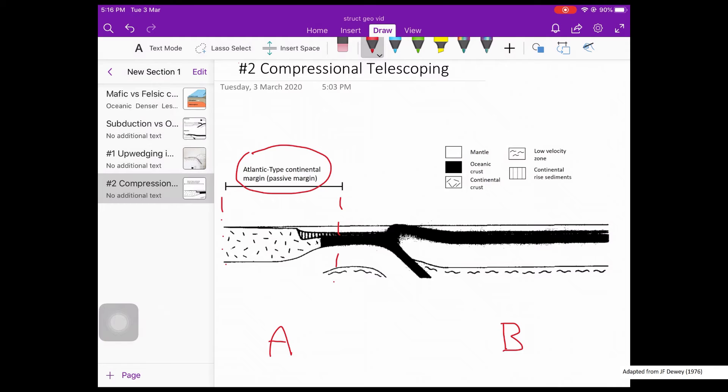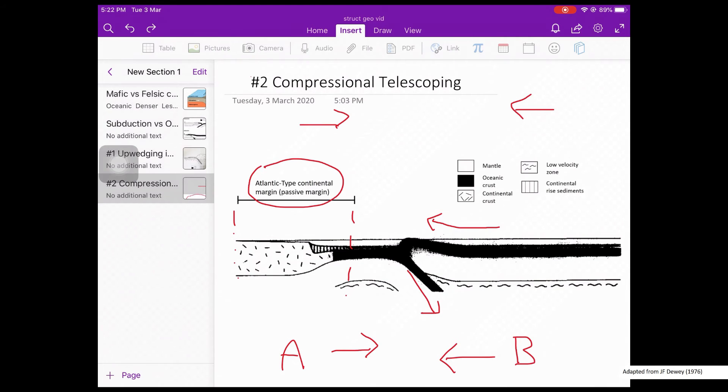Now, we will consider compressional forces at work pushing A and B towards each other. There is a subduction zone in the middle here, between two oceanic crusts. Note that at this point, the subduction is not between the continental margin and the oceanic plate. The oceanic crust on A side is being subducted beneath the oceanic crust on B side. Over time, as more of A's oceanic crust gets swallowed, the continental margin of A will approach B. And eventually, what will happen is that a giant piece of oceanic crust from B will be pushed across and over the continental margin in A.